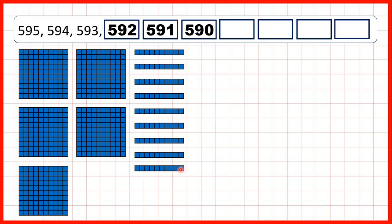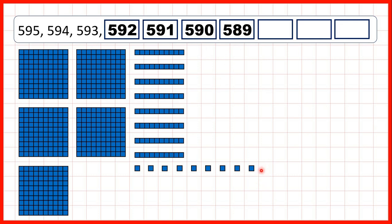But now to take one away, we need to exchange this ten for ten ones. So then when we take one away, we get five hundred and eighty-nine. We now have five hundreds and only eight tens, because we had to exchange one of them to take one away. Then we continue counting back until we get to five hundred and eighty-six.